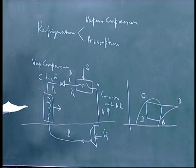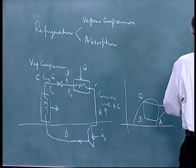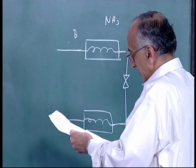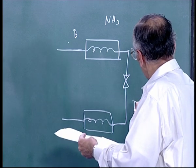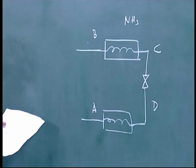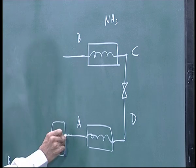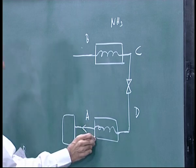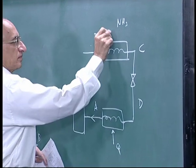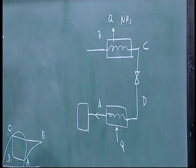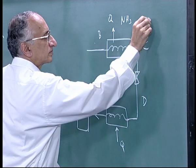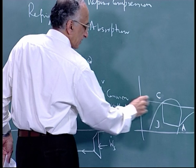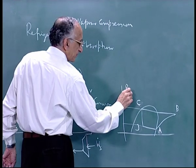Points B, C, D, A are common to absorption refrigeration. Labeling: B is before the condenser, C is after condensing, D is after throttling, A is after the evaporator. There is an absorber here — the refrigerant is ammonia. Ammonia comes out after throttling; this is where the heat is picked up. This side is the cooling (low pressure) side, and the other side is high pressure.